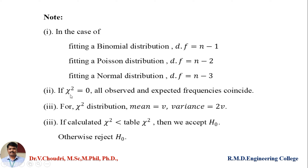When chi-square equals 0, all observed and expected frequencies coincide — there is no difference. For example, like an astrologer who predicts events in your life: if the same thing happens, both coincide and chi-square equals 0. If what they predicted does not match, chi-square equals some other value. For chi-square distribution, the mean value equals v and the variance equals 2v.